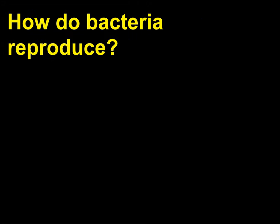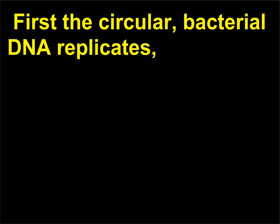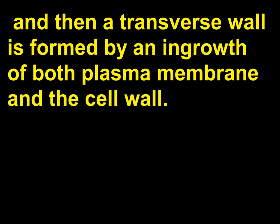How do bacteria reproduce? Bacteria reproduce asexually by binary fission, a process in which one cell divides into two similar cells. First, the circular bacterial DNA replicates, and then a transverse wall is formed by an ingrowth of both the plasma membrane and the cell wall.